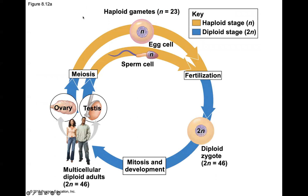For humans, we have 46 chromosomes in somatic cells. Our haploid number is 23, so sperm and egg have half the number of diploid cells. The creation of a new individual requires genetic information from both mom and dad — a set of chromosomes from each parent. Haploid is N, diploid is 2N. For diploid humans, 2N equals 46.